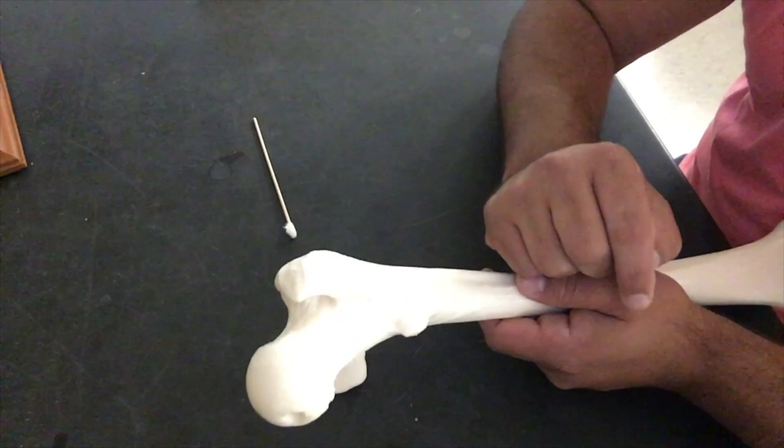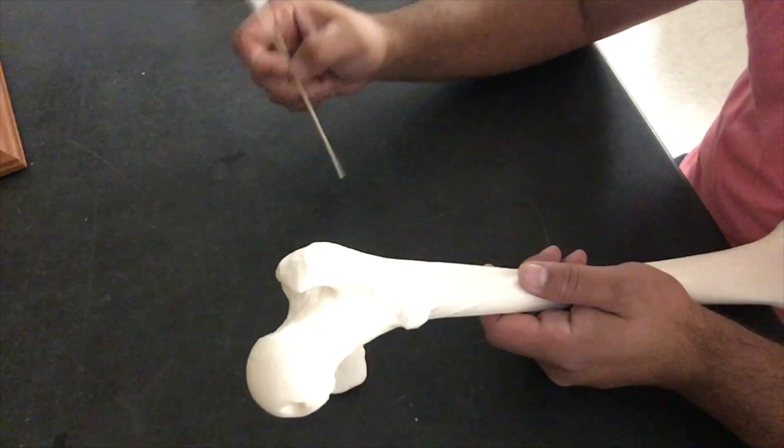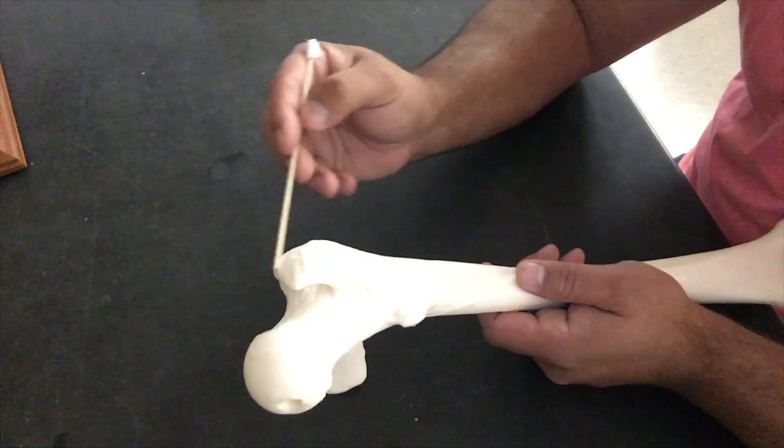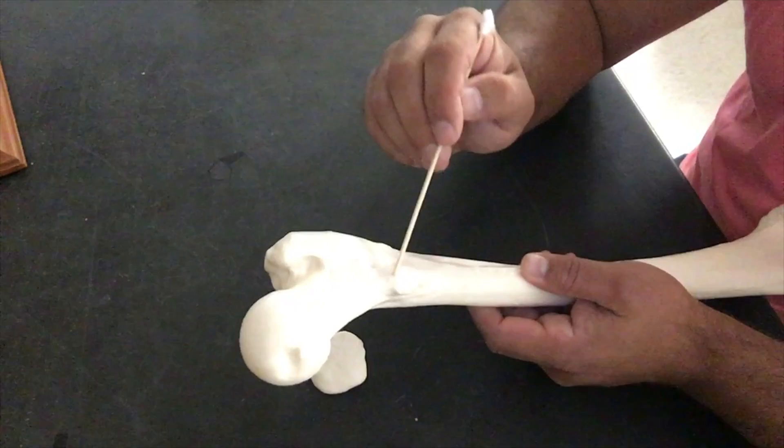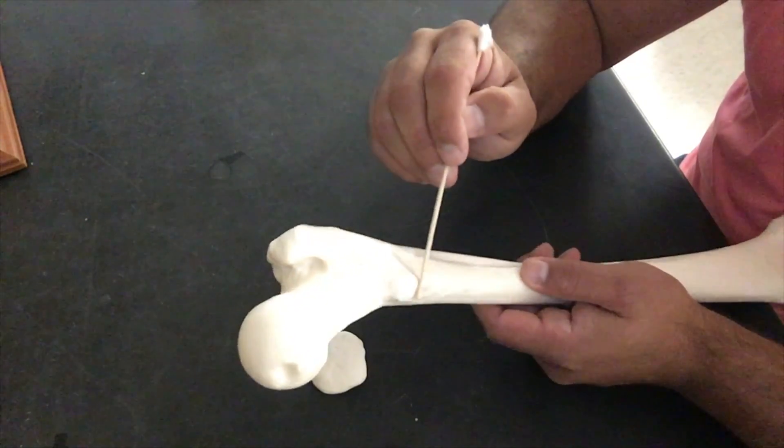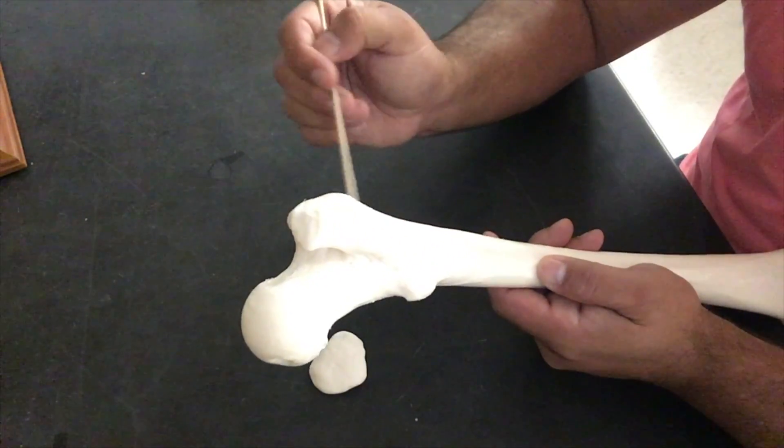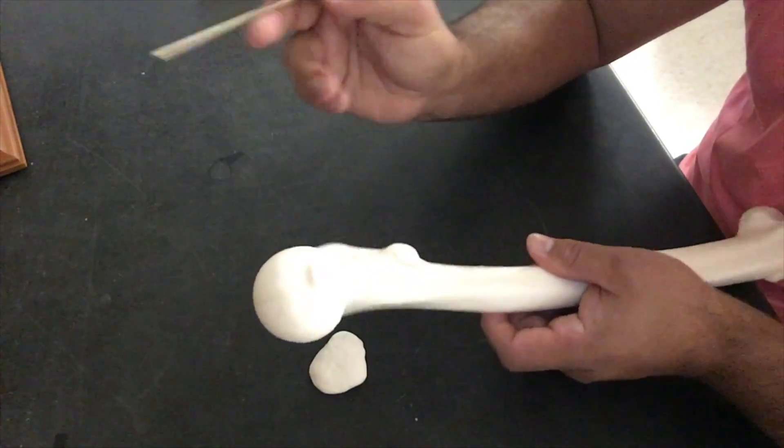They're going to be called trochanters. And again, we follow the rule that we always do. We have a big trochanter and a little trochanter. So we're going to apply the name greater trochanter and lesser trochanter. So again, we have the larger or greater trochanter with the lesser trochanter.